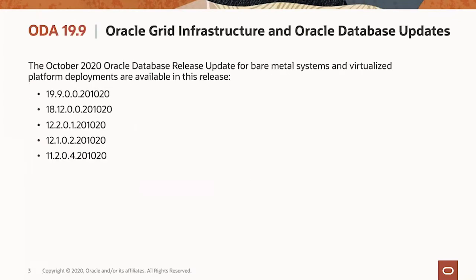As usual, we do these quarterly updates, which includes the latest database release updates — the October 2020 RUs. That will be applicable to all the databases we support: from 11.2, to 12, to 18, as well as 19 Oracle databases. So you can upgrade your database in ODA to the October release updates.